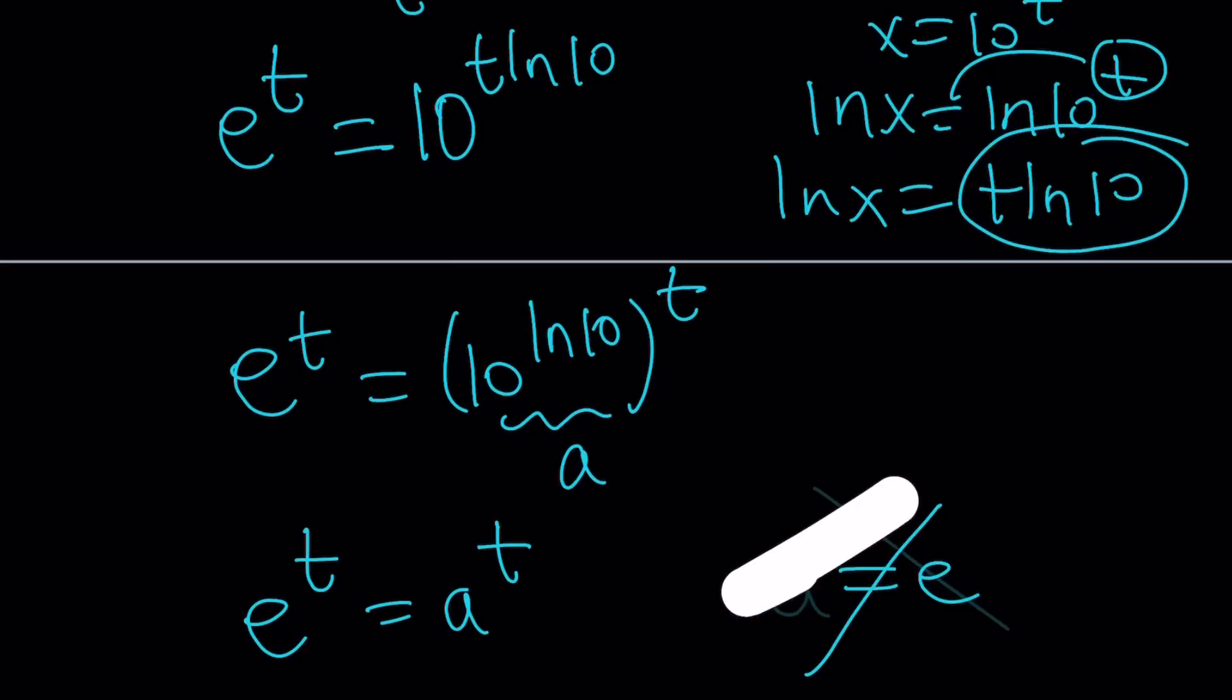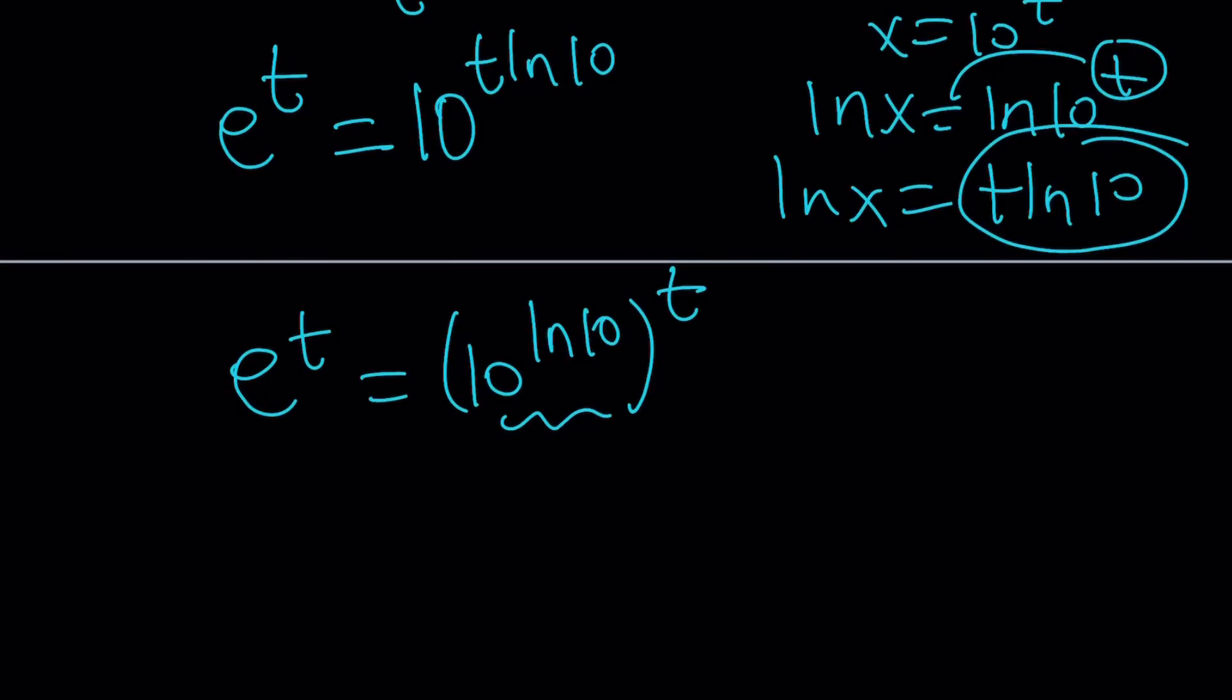Don't say a equals e because a is not e in this case. Anyways, if this is confusing, forget about it. So, here's my point. My point is you have the same exponent but different bases. These are different bases. This can only be true if they're both equal to 1. In other words, if t is equal to 0.